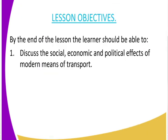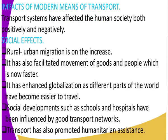By the end of the class, we expect that we will be able to discuss the social, economic and political effects of modern means of transport. Transport system has affected the human society both positively and negatively — affecting people socially, politically, and economically. Those are the three parts we will cover.